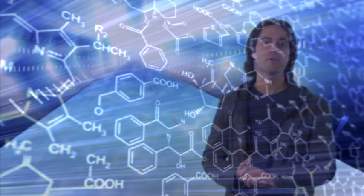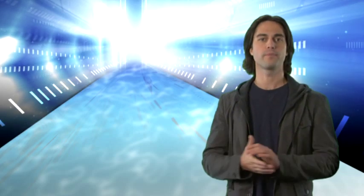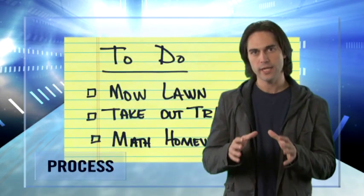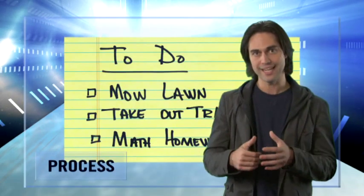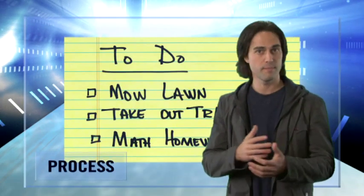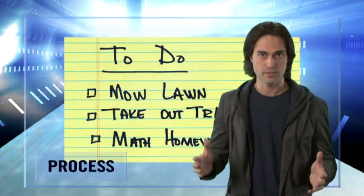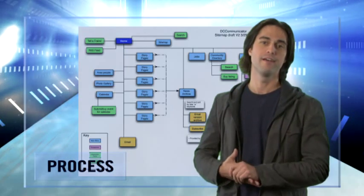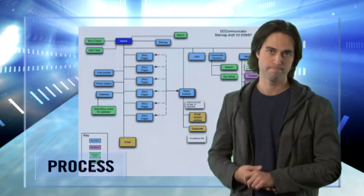The third type of model is the process model. It describes the steps we need to follow to get something done. This could be as simple as a to-do list, or for the computer types out there, a flow chart.